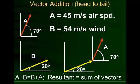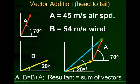So what we want to do is see, if we put these head to tail — and in this case we put wind speed ahead of air speed — we want to find out what is that actual speed relative to the ground. This blue vector, again, is our resultant: the sum of the vectors.